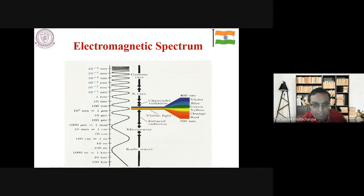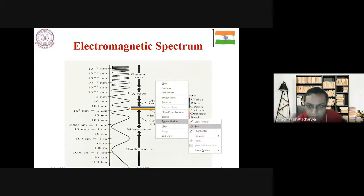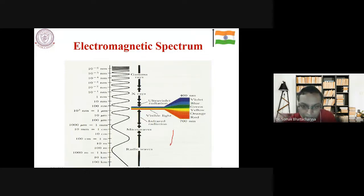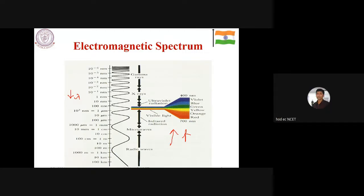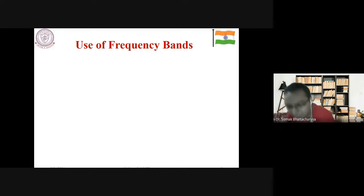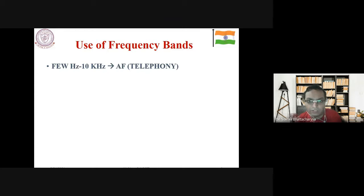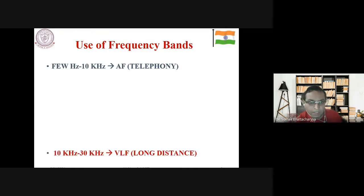The different frequency bands have different names. From a few hertz to 10 kHz is the audio frequency (AF), used for telephony and voice communication. From 10 to 30 kHz is very low frequency (VLF), used for long-distance communication. From 30 to 300 kHz is low frequency (LF), used for navigational purposes. From 300 kHz to 3 MHz is medium frequency (MF), used for radio broadcast, including AM radio with a standard broadcast range of 550 kHz to 1.65 MHz.